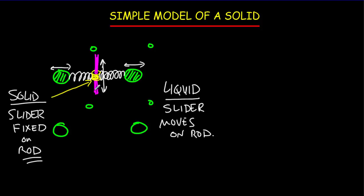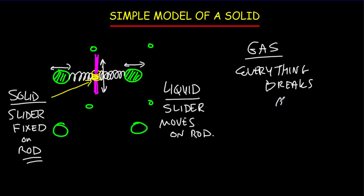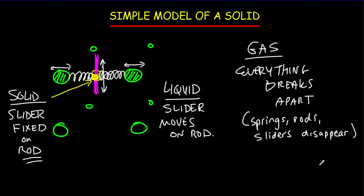Now, if we keep adding heat and the vibrations keep getting bigger and bigger, we eventually — at least in this model — just kind of blow everything apart. The springs and the rods and the sliders all disappear. In our gas, everything breaks apart — the springs, the rods, the sliders all disappear. And of course, the particles get a lot farther apart, which is why gases are much, much less dense than liquids or solids.